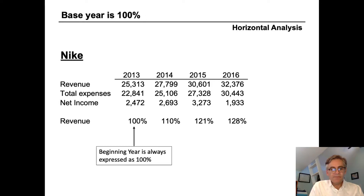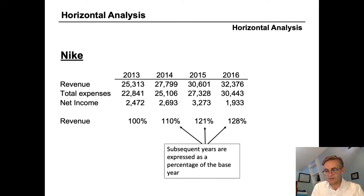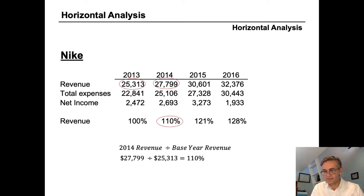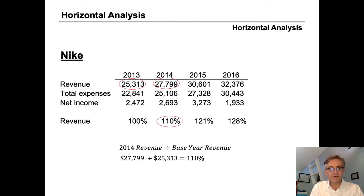To begin, the base year in a horizontal analysis is always expressed as 100 percent. The base year in this case is the first year, which is 2013, and then all subsequent years are expressed as percentages of the base year. So 2014 expressed as a percentage of 2013 is 27.7 divided by the base year amount of 25.3, which gives us 110 percent. So 2014 revenue is 110 percent of 2013 revenue.